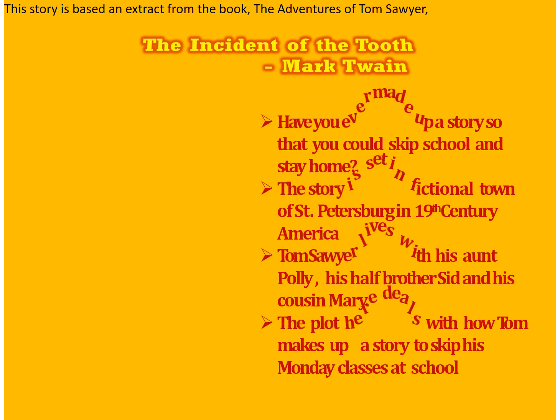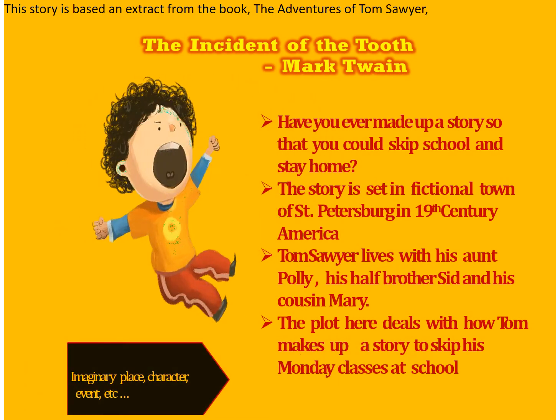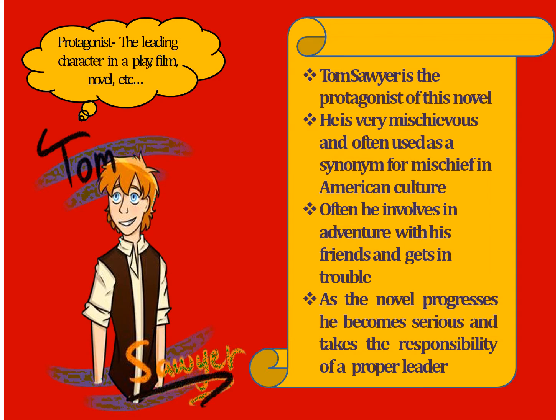This story is an extract from the book 'The Adventure of Tom Sawyer.' Have you ever made up a story so that you could skip school and stay home? The story is set in the fictional town of St. Petersburg in 19th century America. Fictional means imaginary place, imaginary character, event, etc. This hero Tom Sawyer lives with his aunt Polly, his half-brother Sid, and his cousin Mary. The plot deals with how Tom makes up a story to skip his Monday classes at school. Tom Sawyer is the protagonist of this novel — protagonist means the leading character in a play, film, or novel.